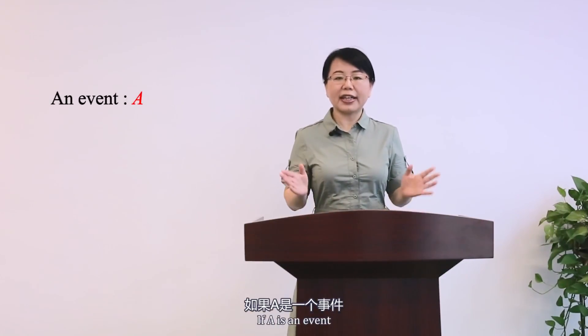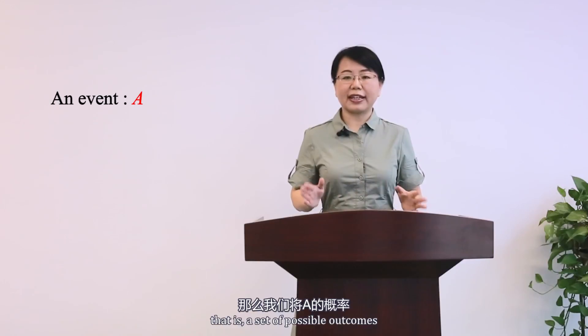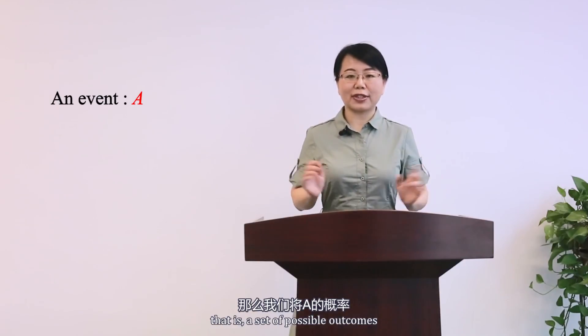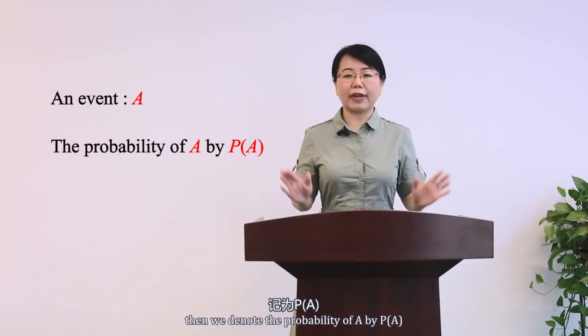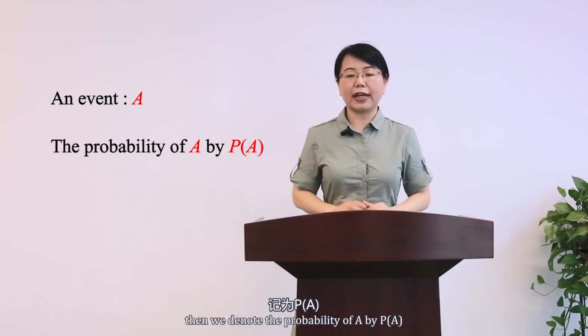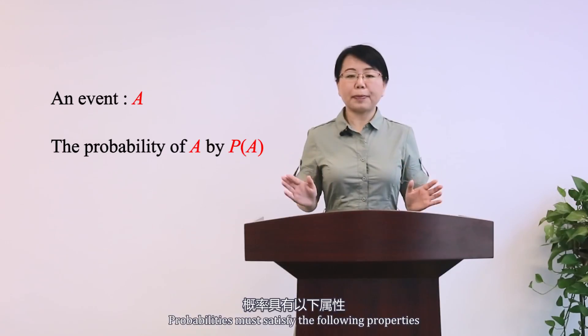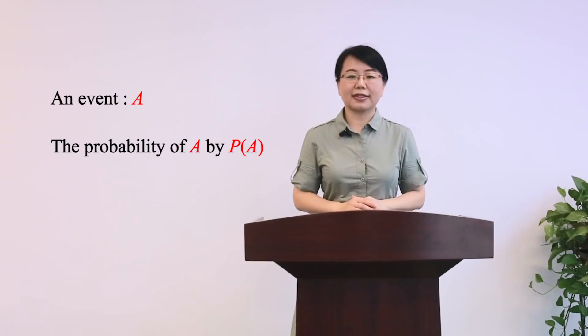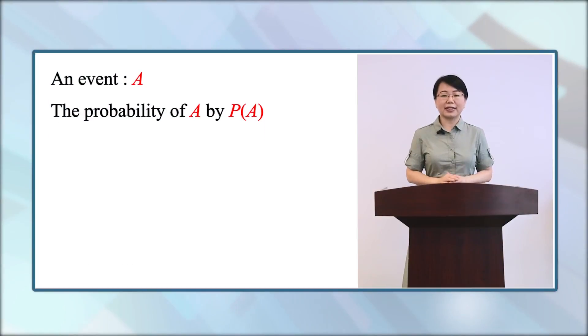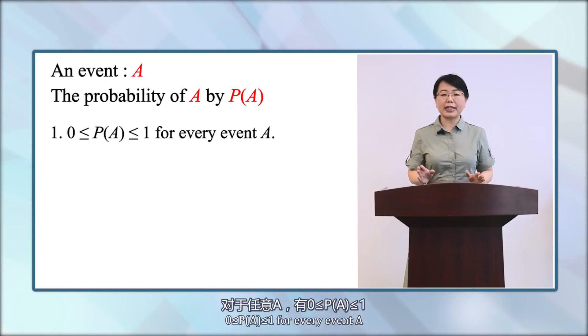If A is an event, that is, a set of possible outcomes, then we denote the probability of A by P(A). Probabilities must satisfy the following properties. First, the probability of A is greater than or equal to 0 and less than or equal to 1 for every event A.